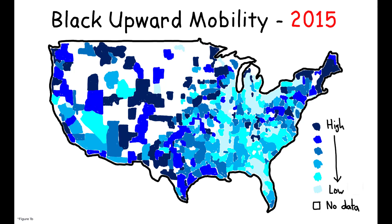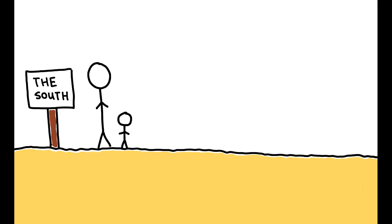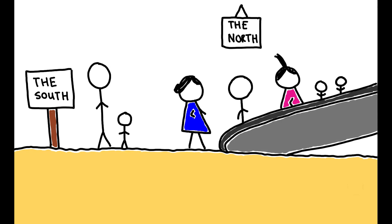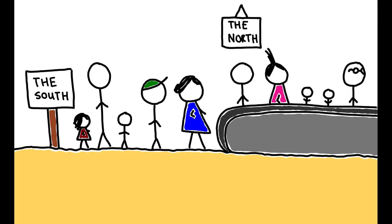This raises the question, while greater upward mobility in the north motivated many families to relocate there during the mid-1900s, did this large-scale migration eventually erode the same positive features that had initially drawn them?